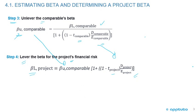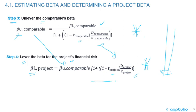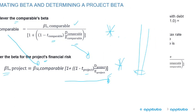On the next slide we'll work through an example to see how we do these calculations. You absolutely need to memorize these two formulas. The key insight is that the denominator structure is the same in both — you're just swapping the comparable company's numbers for the project's numbers.